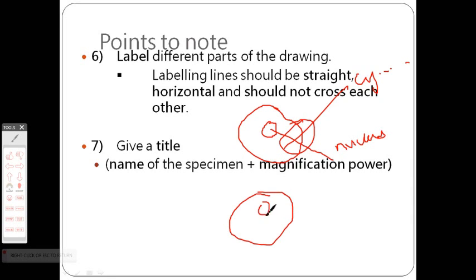You should put the labeling lines horizontal. This is nucleus, this is cytoplasm, this is the cell membrane, and write all the names here. You have to give the title of course and the magnification power.